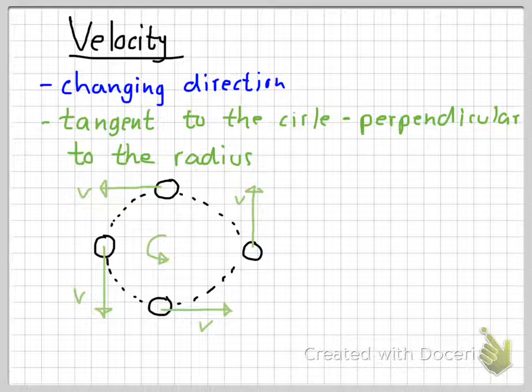If we reverse the direction that it's moving, then we will reverse the direction of all those arrows. If I let go of the object and let it move straight, it's just going to move in the direction of that arrow at that particular point.